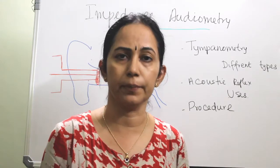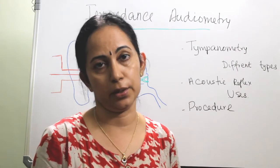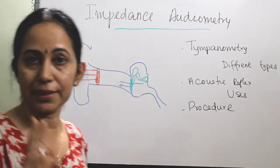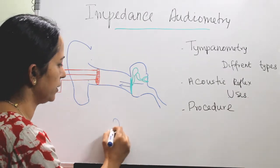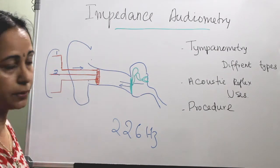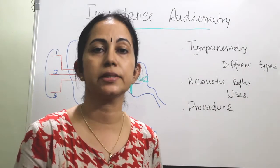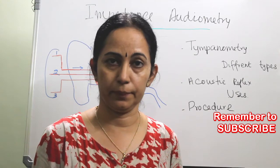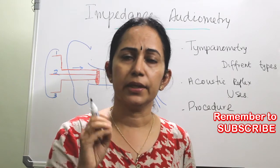In a tympanogram, we have basically a machine and a probe. The probe has got three channels: one is an oscillator which delivers the tone — for adults it is usually 226 Hz; second is an air pump which increases or decreases the pressure in the external auditory canal; and the third is a microphone which picks up and measures the amount of sound that is reflected. Since this is an objective method, very little patient cooperation is needed, so you can do this in children.